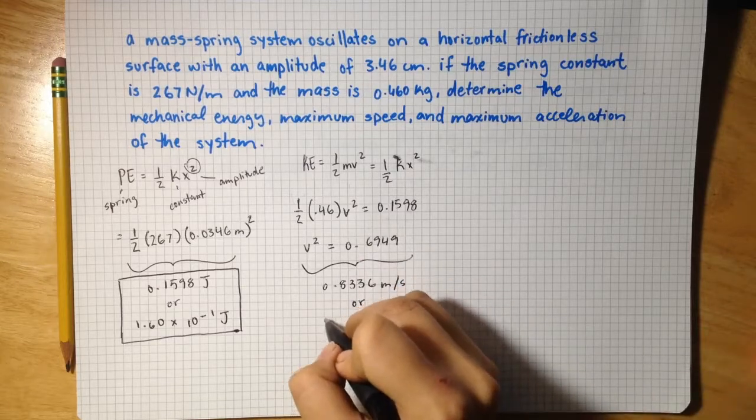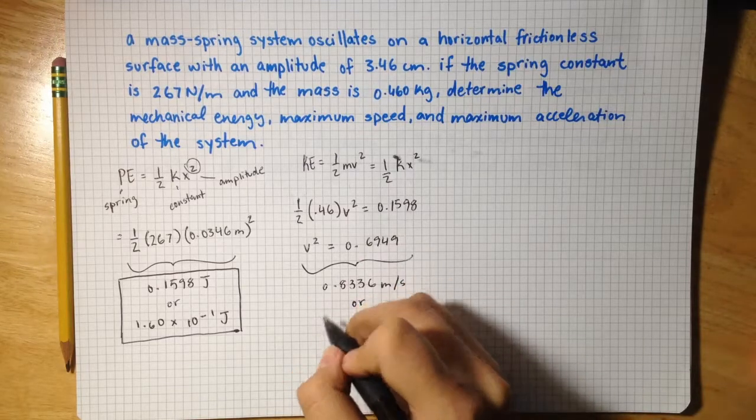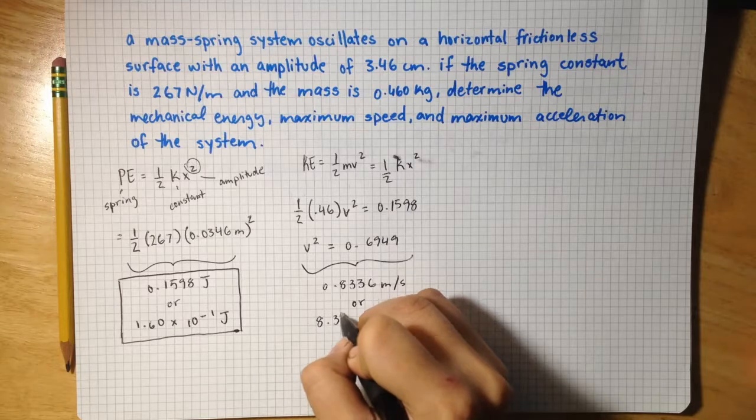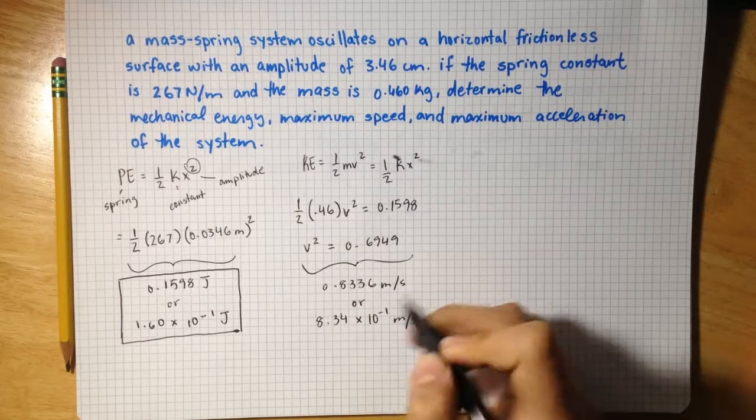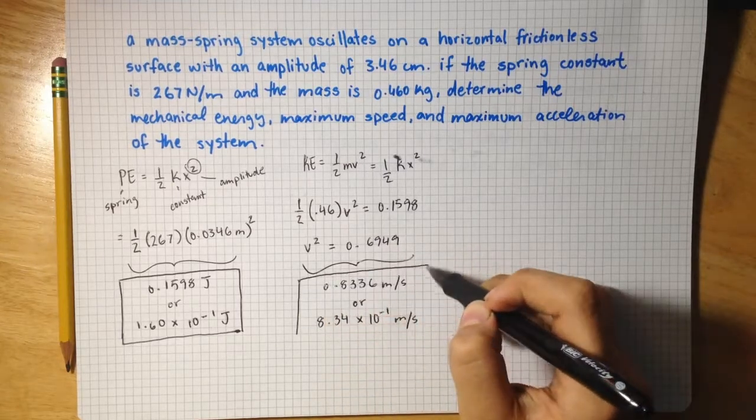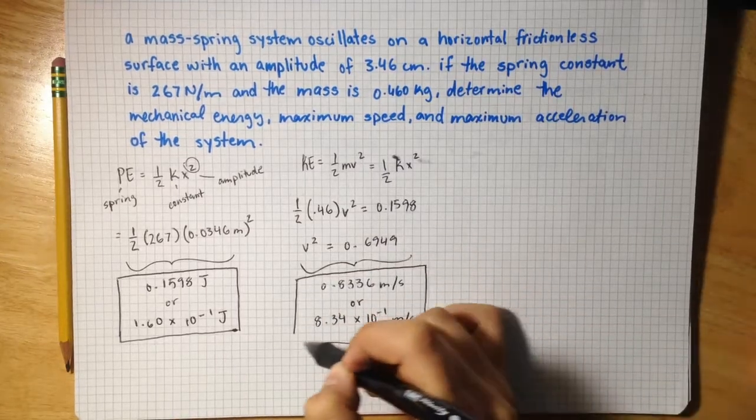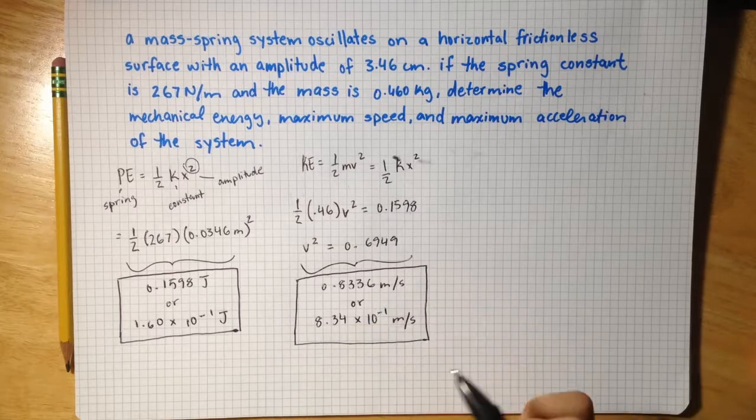Or if you wanted to write it in scientific notation, 8.34 times 10 to the negative 1 meters per second, because this is velocity. So this is the maximum speed of the mass.